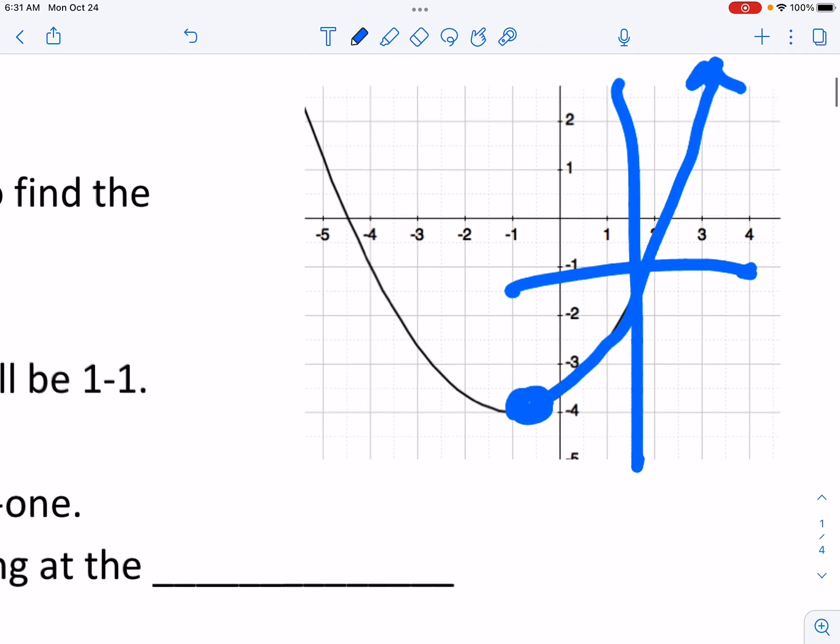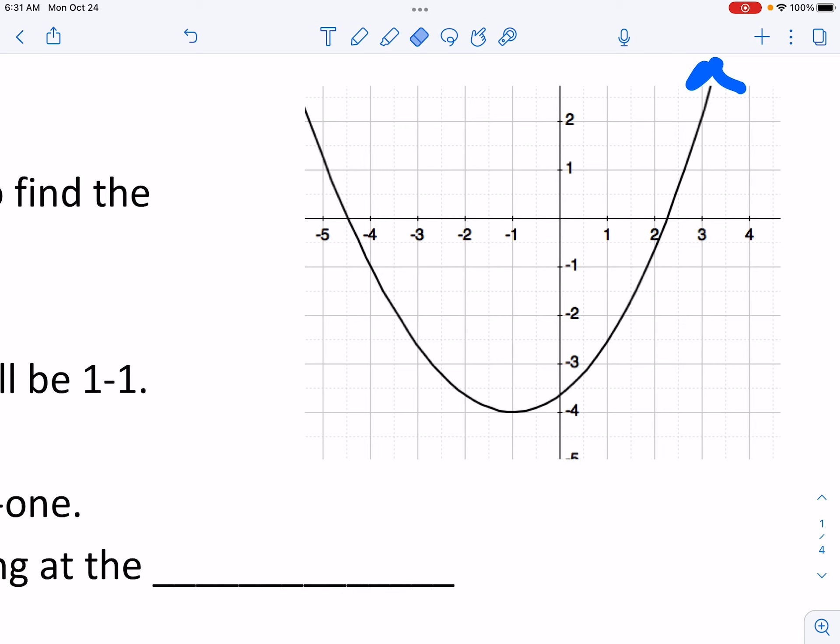Up here we had the vertex was at negative 1 comma negative 4. So if I was to restrict the domain on this I'd say I only want the x values that are greater than or equal to negative 1.